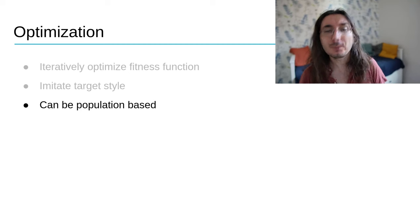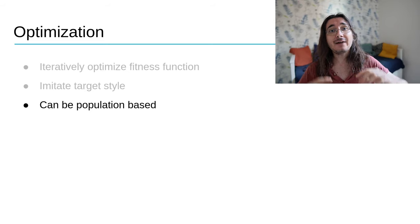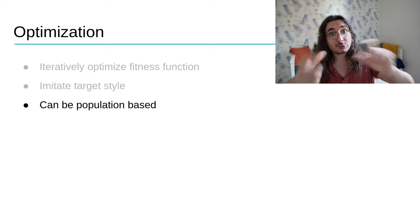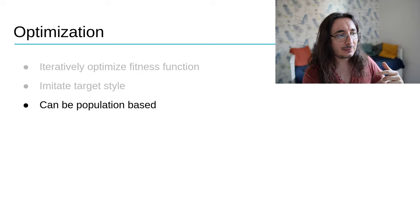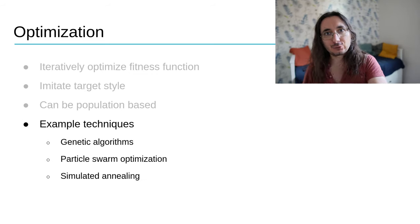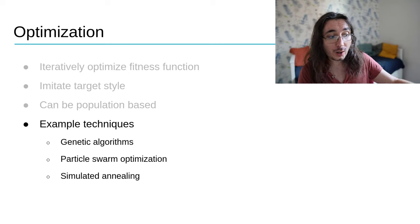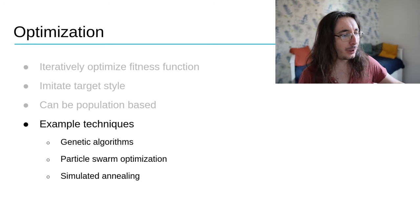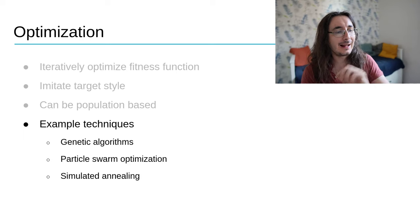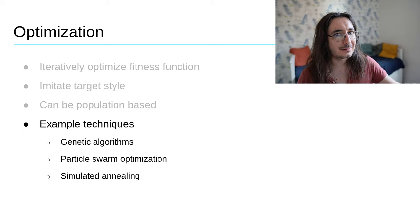These optimization techniques can be population-based — rather than a single solution we have a population of many melodies that interact to produce improved populations at each step. This is central to genetic algorithms and evolutionary algorithms. Others include particle swarm optimization and simulated annealing — I've used simulated annealing extensively for generating melodies and chords. It's a super cool algorithm, but I won't get into the details here.